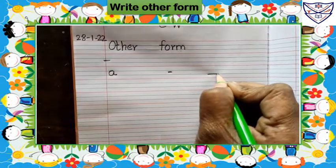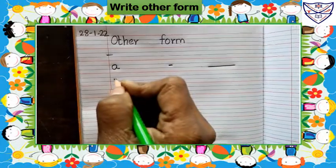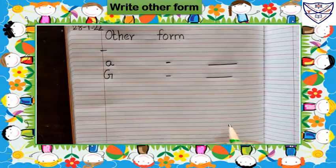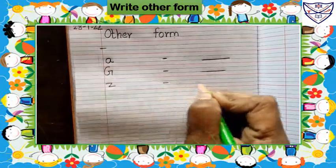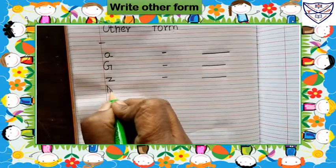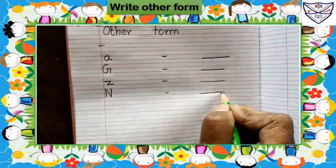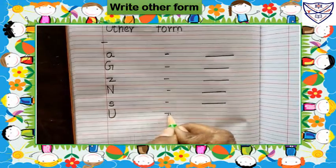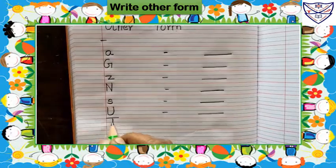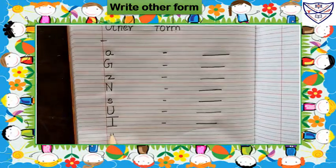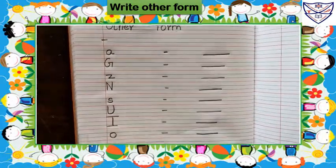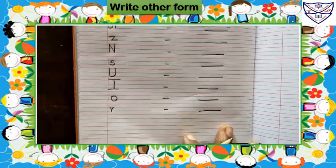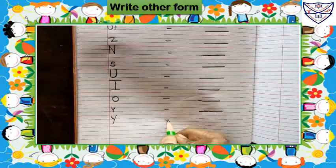Here, again leave some space then put a dash like this. Then in the next line write capital G, dash, dash. Then small z, dash, dash. Capital N, dash, dash. Small s, dash, dash. Capital U, dash, dash. Capital I, dash, dash. Small o, dash, dash. Small r, dash, dash. Capital Y, dash, dash.